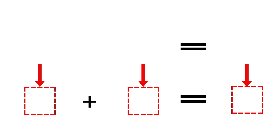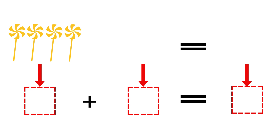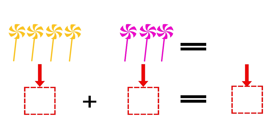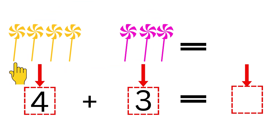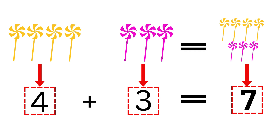Now, take a look. Let's add some elements. Here goes the first candy, second candy, third candy, fourth candy on the same side. On the other side, I will add first candy, second candy, third candy. So, on one side we have four candies, and on the other side we have three candies. How many candies are there in total? Let's count: one, two, three, four, five, six, seven. In total, we have seven candies. Which means four plus three is equal to seven.